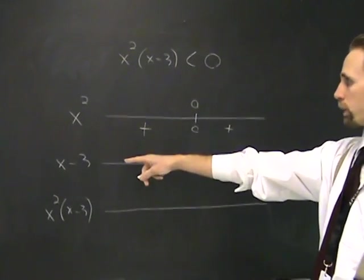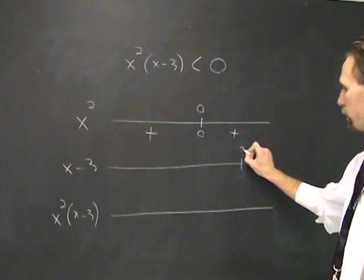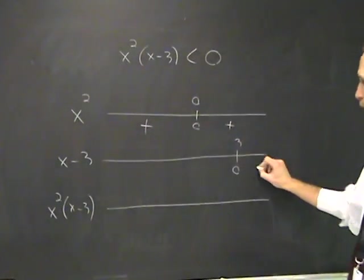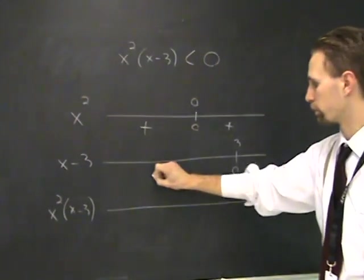Play the same game with the 3. At 3, x minus 3 is 0. If x is greater than 3, positive, less than 3, it's going to be negative.